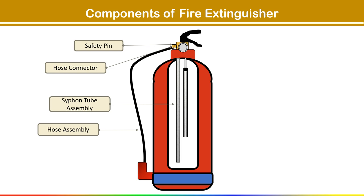Next is the hose assembly. This hose allows the extinguishing agent to travel from the tank to the base of a fire and enables the user to aim the flow of the agent. Next, the spray nozzle is used for extinguishing large fires. It connects to a fire hose to distribute and direct pressurized water or fire retardant.